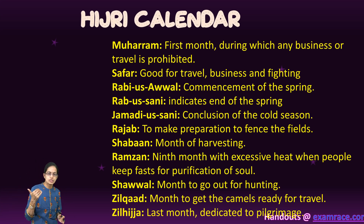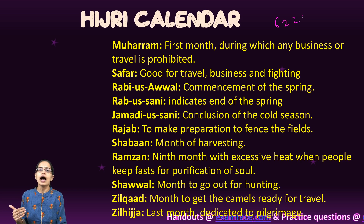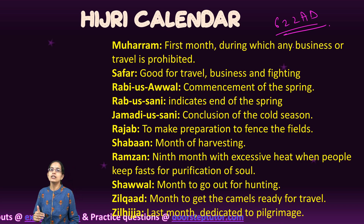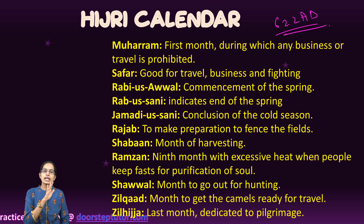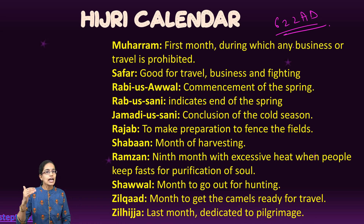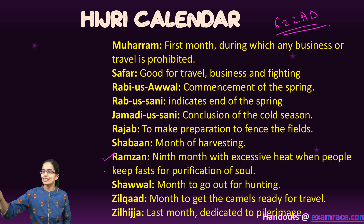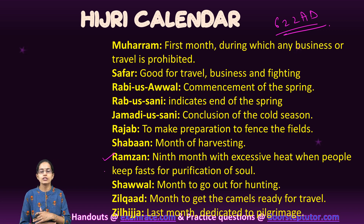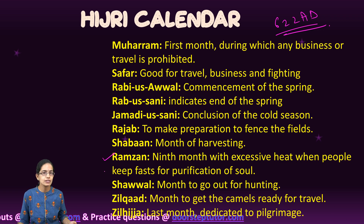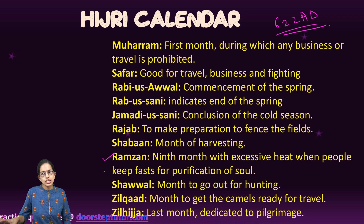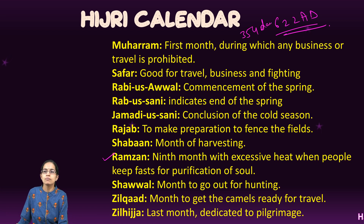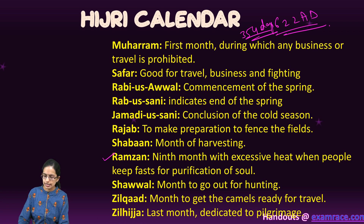The Hijri calendar is a lunar calendar that started with night in 1622 AD, considered its zero year. It has 12 months: the first month, Muharram, prohibits travel and business; the ninth month, Ramzan, is the month of fasting and purification; and the second month, Safar, is considered most auspicious for travel and business. The Hijri calendar has 354 days and was established by Prophet Mohammed.